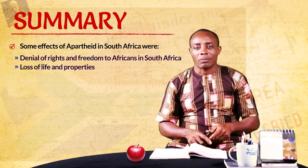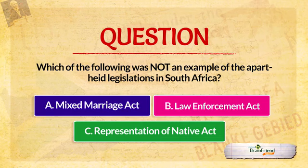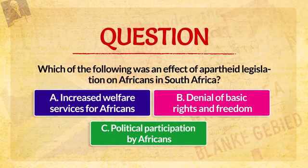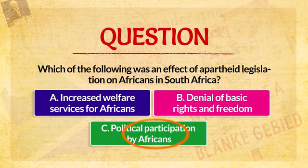Now let us take some questions to test our knowledge. Question 1: Which of the following was not an example of apartheid legislation in South Africa? A. Mixed Marriage Act, B. Law Enforcement Act, or C. Representation of Native Act? The correct answer is B — Law Enforcement Act. Question 2: Which of the following was an effect of apartheid legislation on Africans in South Africa? A. Increased welfare services for Africans, B. Political participation by Africans, or C. Denial of basic rights and freedom? The correct answer is C — Denial of basic rights and freedom.